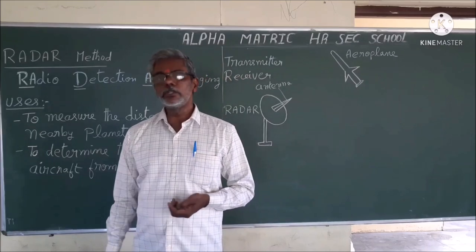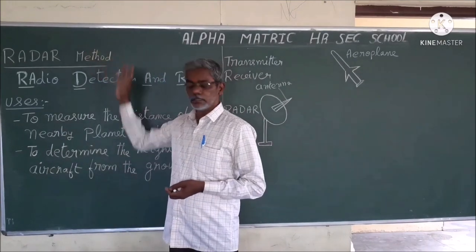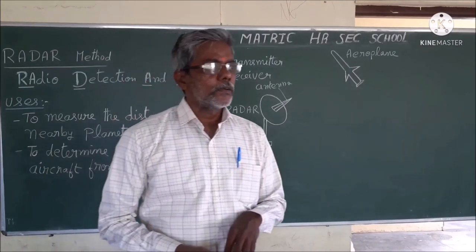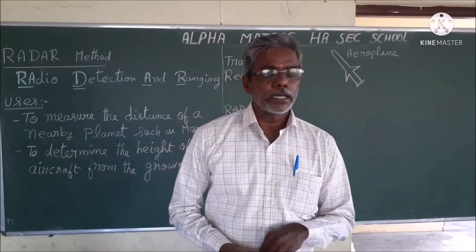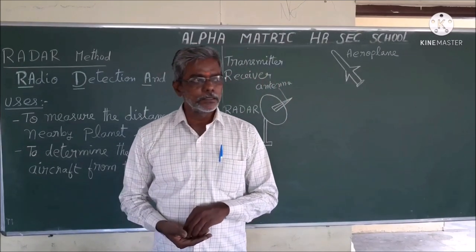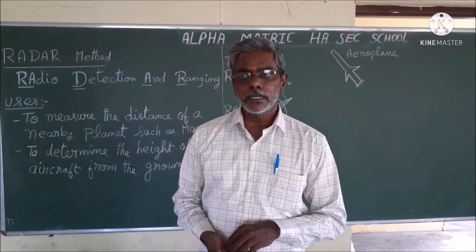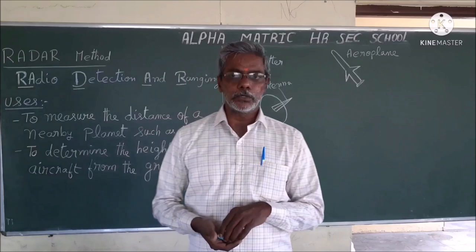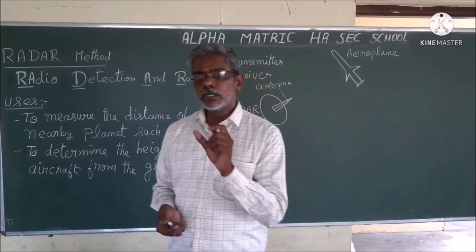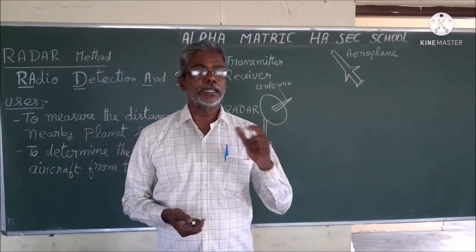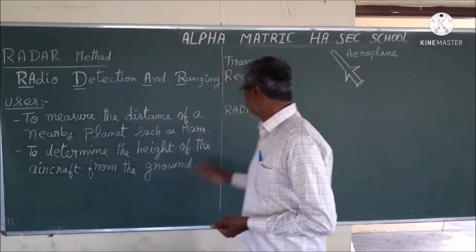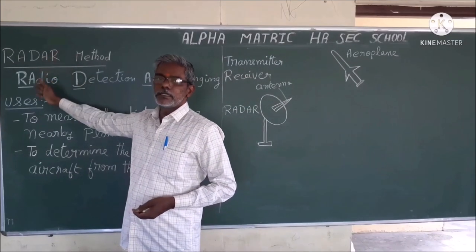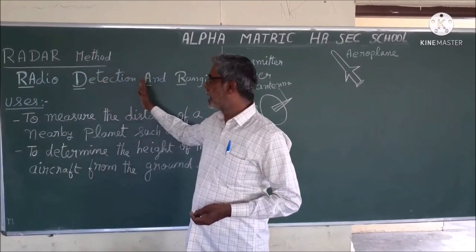Today we are going to discuss about the RADAR method. In the news, we heard that when an aeroplane is flying at 10,000 feet high, suddenly due to failure in the engine, it has dropped and landed on the earth near an airport. This 10,000 feet height — how do they measure it? By using radar. The acronym for RADAR is Radio Detection And Ranging.